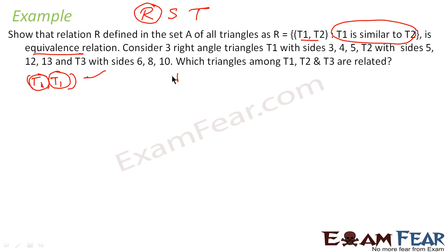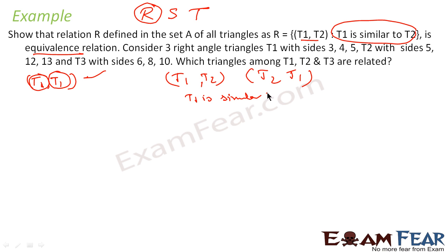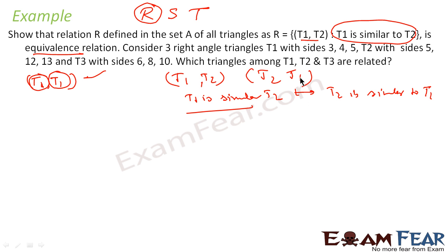For symmetric, if (T1, T2) is a member, then (T2, T1) should also be a member. If (T1, T2) is a member, that means T1 is similar to T2. When T1 is similar to T2, this implies T2 is similar to T1. So (T2, T1) is part of the set. It is symmetric also.